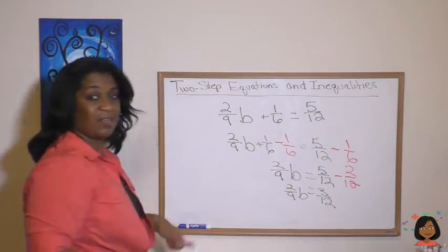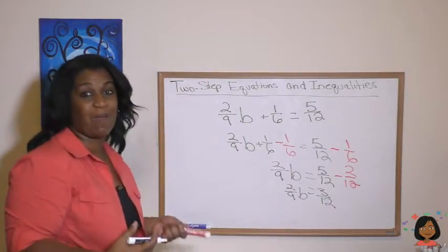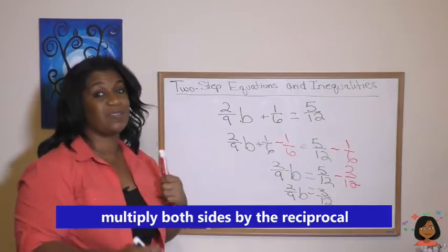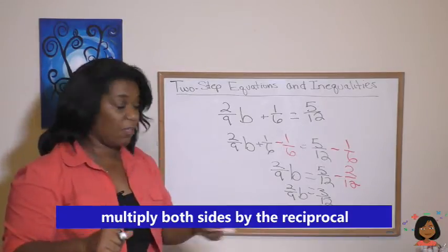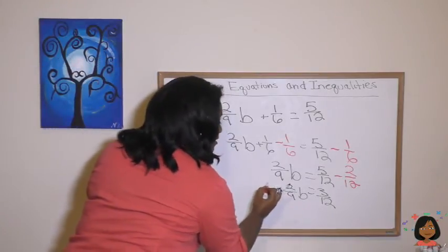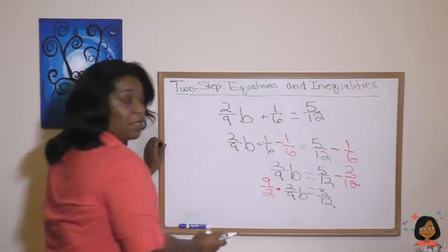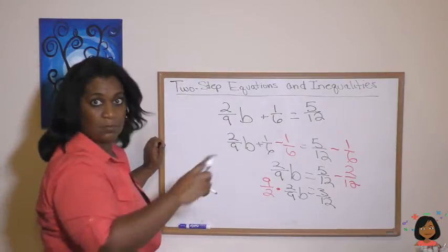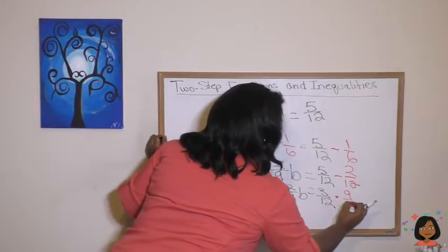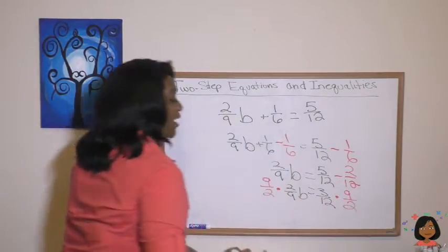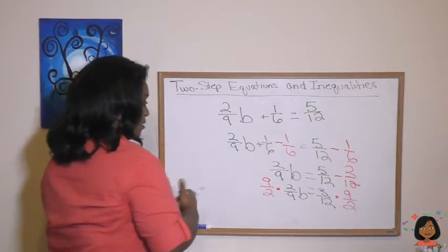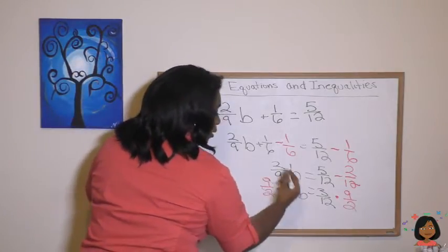That's part one. Part two, to get the b by itself, we have a fraction. We're going to have to multiply both sides by the reciprocal and that's how we'll get rid of two ninths. So let's do it. So we're going to multiply this side by 9 over 2. But what you do to one side, you got to do to the other. So multiply the other side by 9 over 2. And let's do some reducing and canceling. Make life easy for us. We're left with a b.